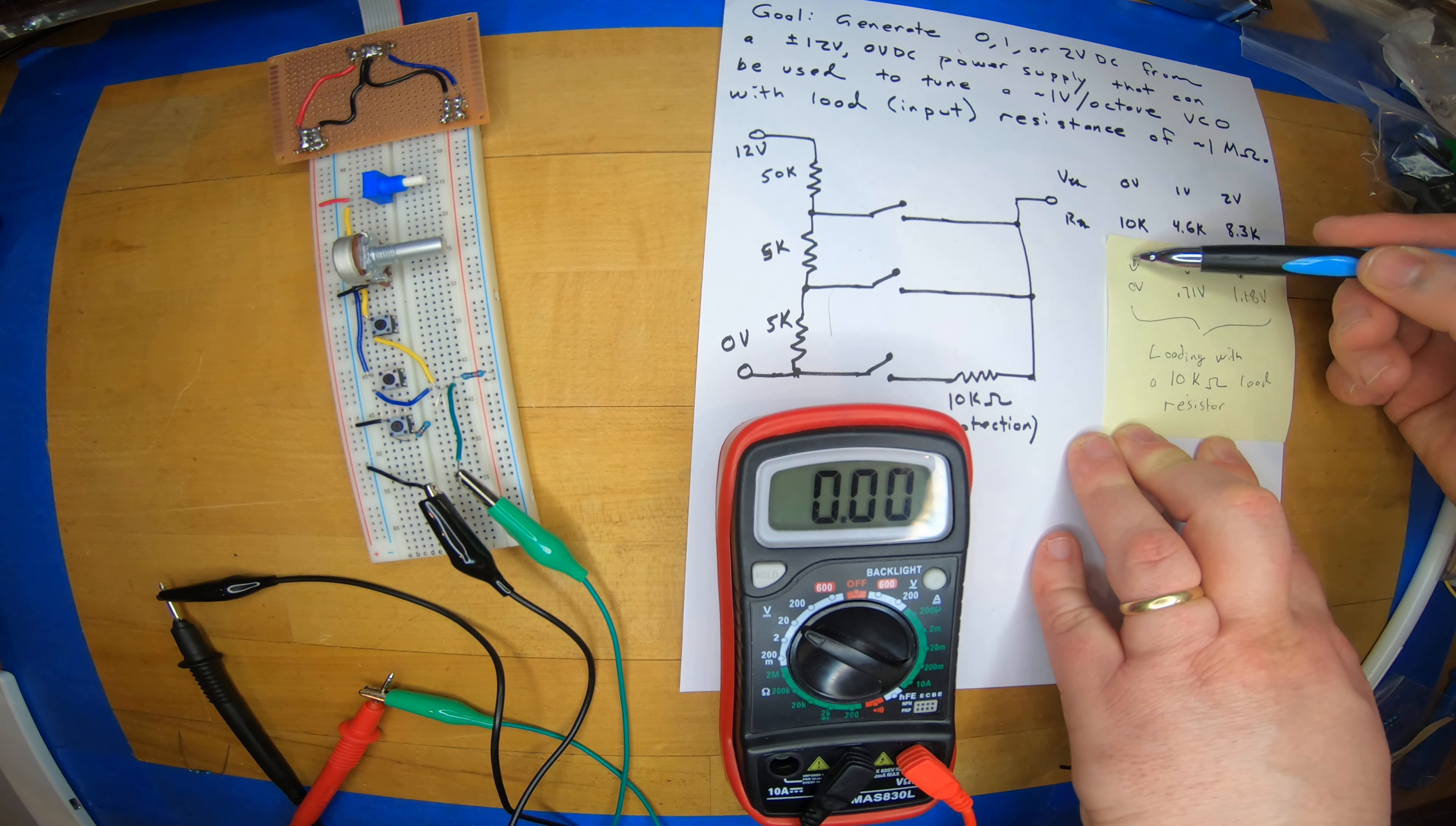Again, if I pull that load, say this 0.71, and I pull the 10K load out, it goes right back up to 1 volt and right back up to 2 volts for the unloaded case.